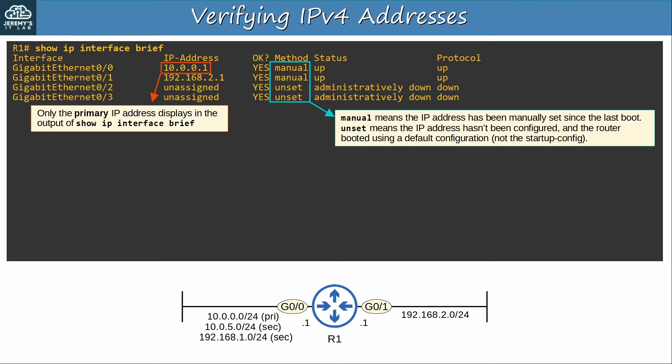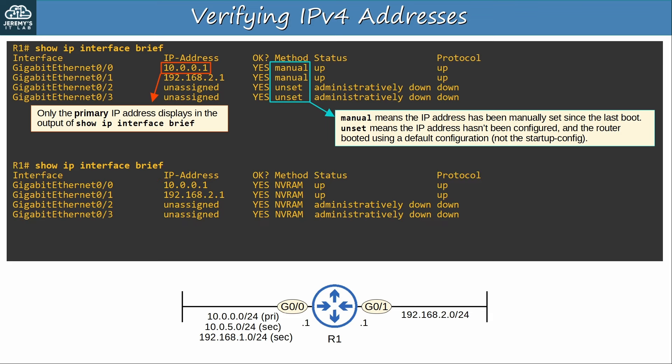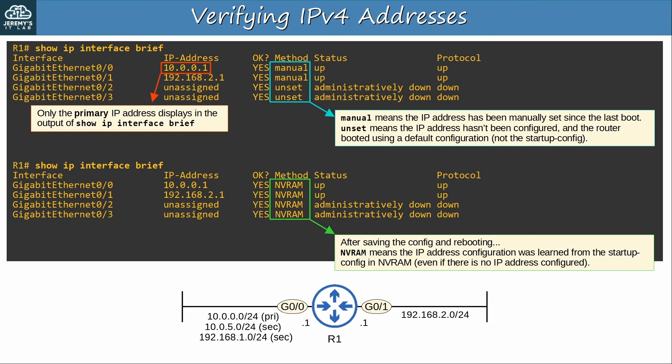I saved the config and then rebooted the device. After saving and rebooting, the METHOD column shows NVRAM, which means the IP address configuration was learned from the startup config in NVRAM. Because I saved the startup config and rebooted the router, the router used the startup config rather than the default config when booting, so NVRAM displays. Now if I changed the IP address configuration of any of these interfaces, the output would change to MANUAL again.